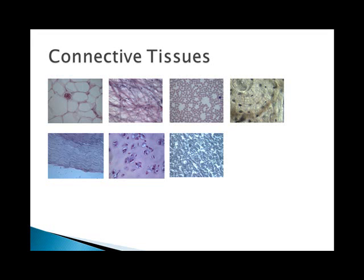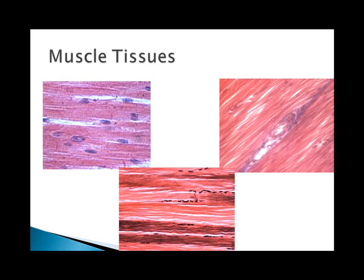Muscle tissue contracts in response to stimulation and then passively lengthens — it can tighten but has to relax on its own. Skeletal muscle tissue attaches to bones for voluntary movement and contains striations or stripes. Smooth muscle tissue, found in the upper right image, is usually found in the gut, blood vessels, and glands. It is involuntary and does not contain striations.